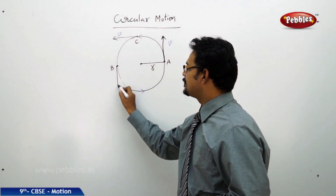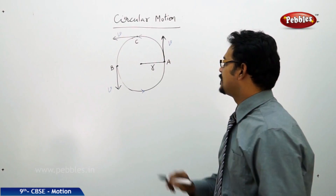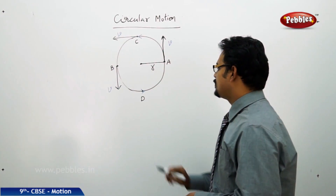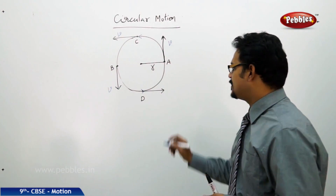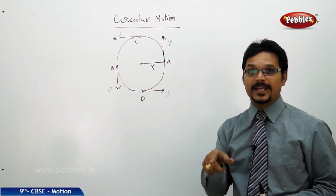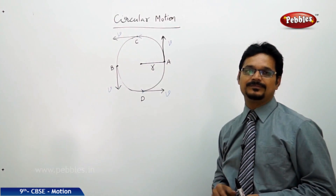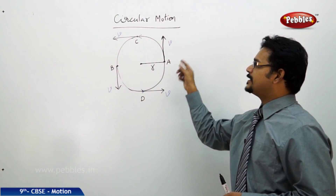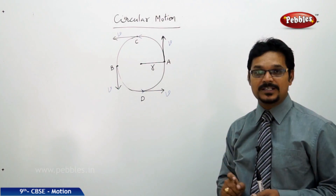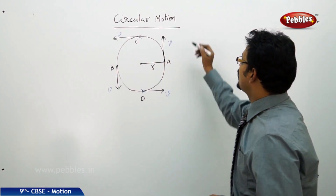At point B, you draw a tangent and that is the direction of speed. At every other point you draw a tangent and the tangent gives the direction of speed. In all these cases I am mentioning the direction of speed — that means speed has direction. When speed has direction it is called velocity. At each and every point the velocity is changing its direction, but it is constant in magnitude.